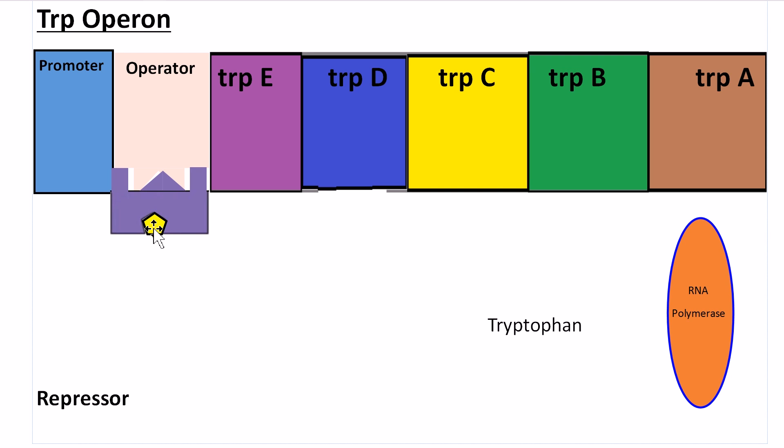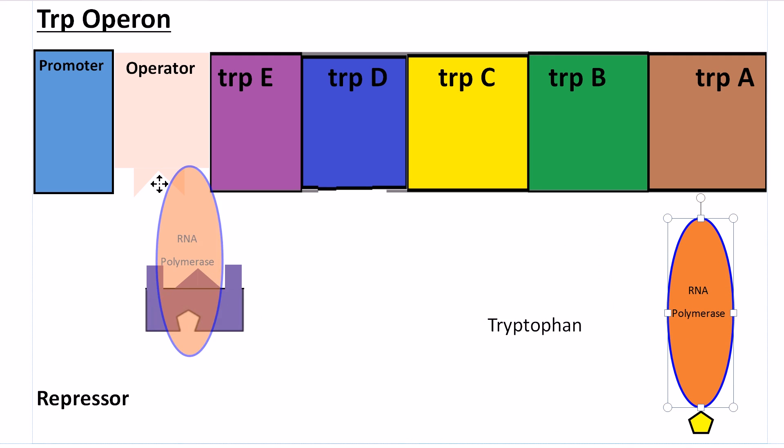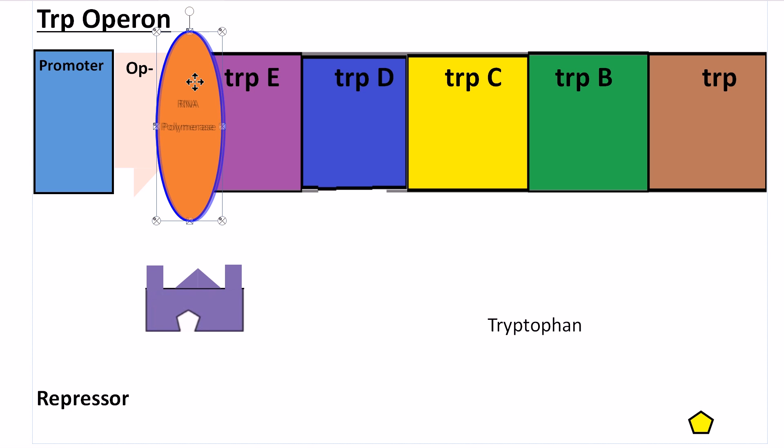If we have no tryptophan, we are going to change the shape of the repressor, and it is going to come off the operator, which is then going to allow RNA polymerase to attach onto the promoter region and drive down the operon, making the genes of trp E, trp D,